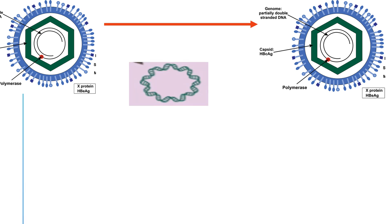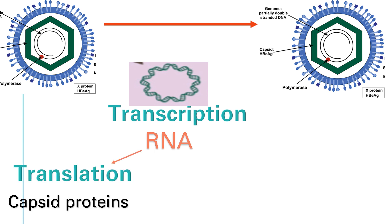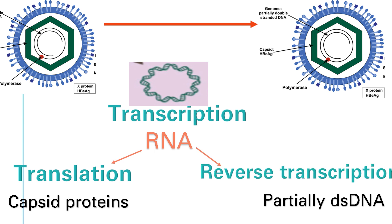Now that we have a fully double-stranded DNA, transcription can occur using cellular machinery to produce RNA. This RNA is used to make capsid proteins through translation by cellular ribosomes, and it is also used to make the viral genome of the progeny — the partially double-stranded DNA — through reverse transcription.